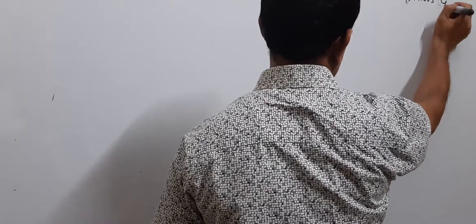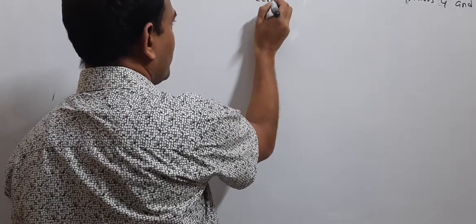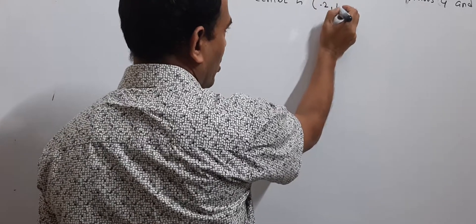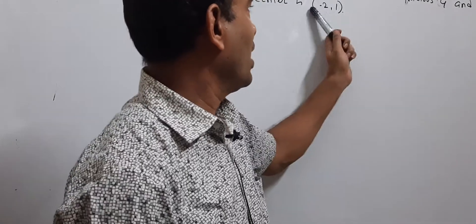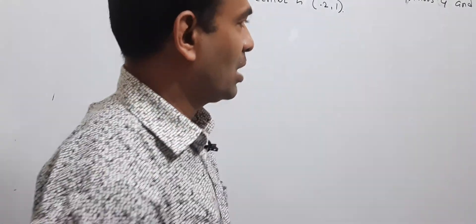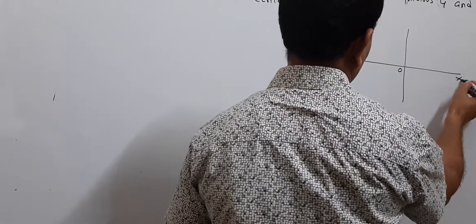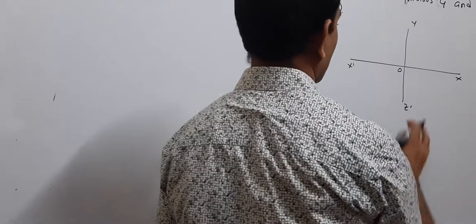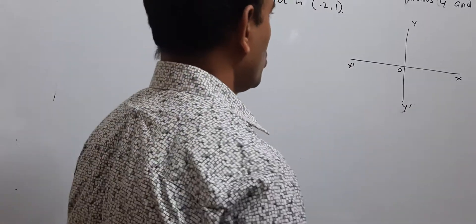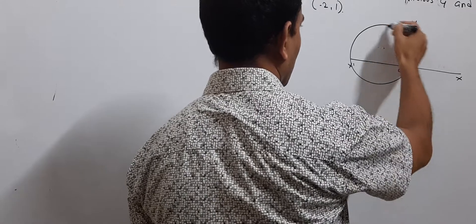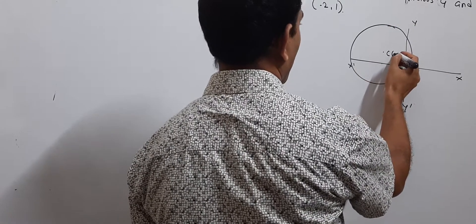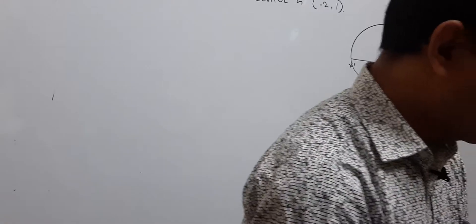Find the equation of a circle which has radius 4 and center (−2, 1). Find the equation of a circle with center (−2, 1) and radius 4. I will find the equation of this circle.